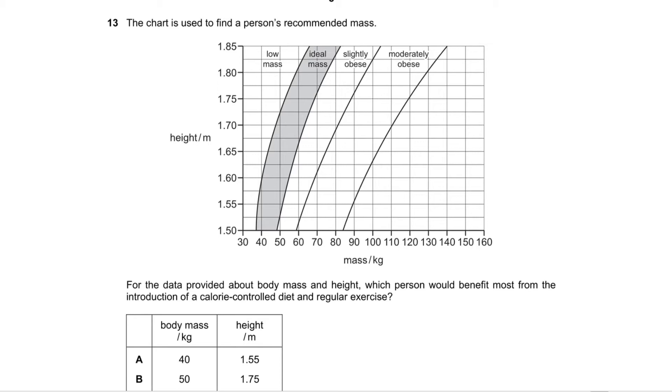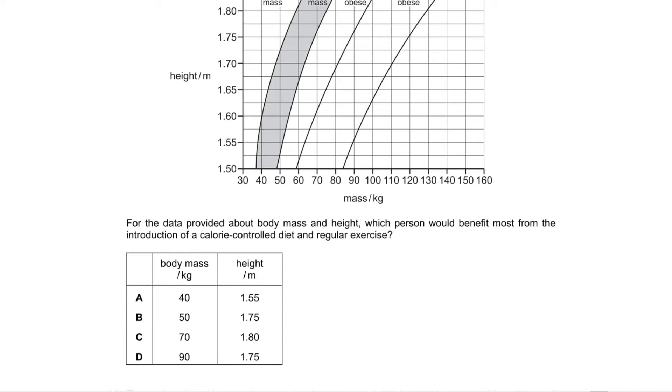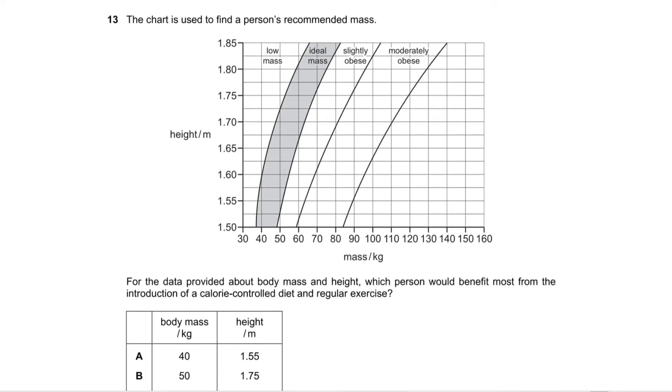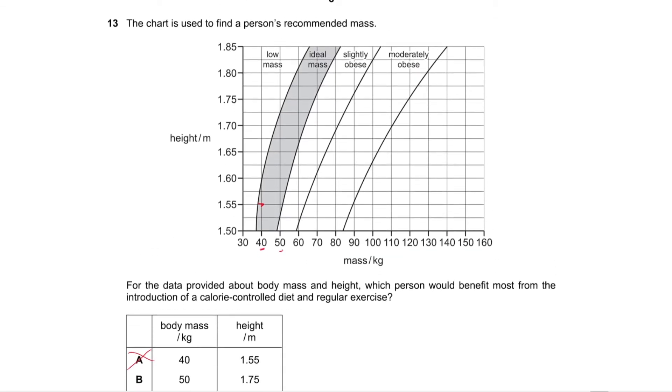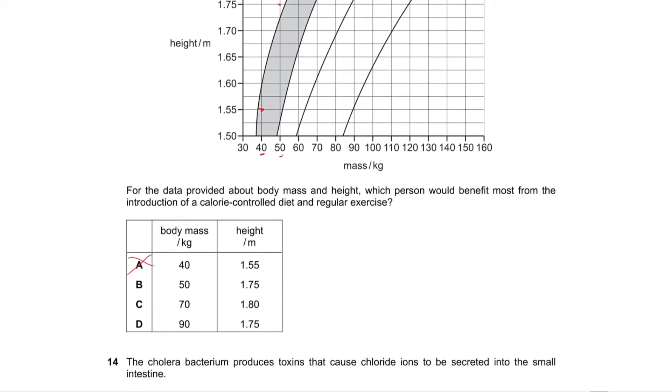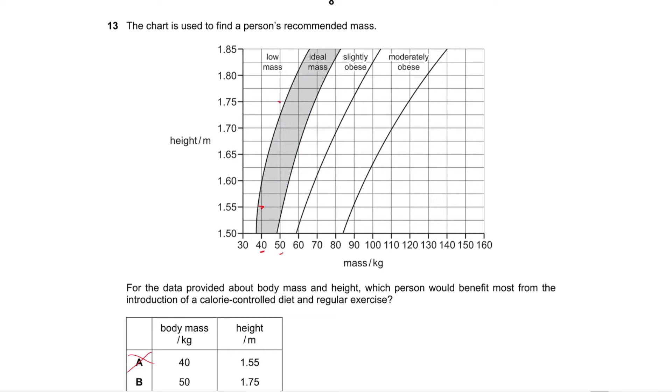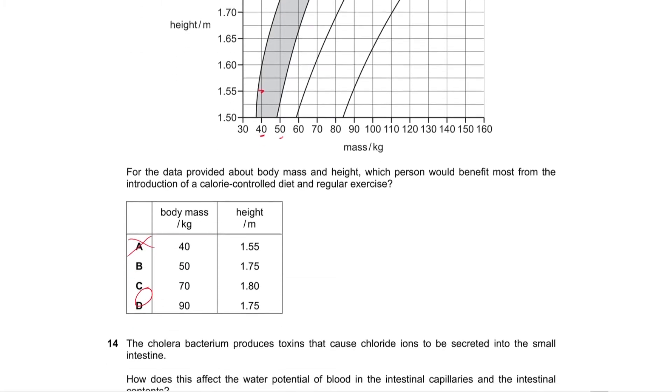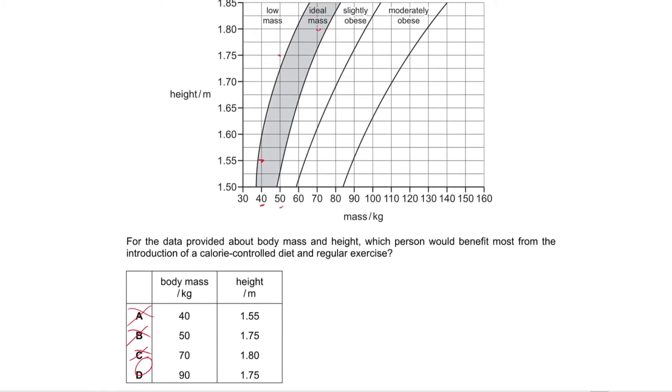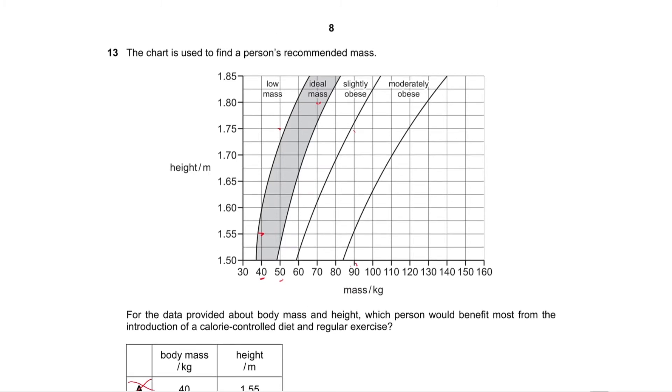Question number 13 says the chart is used to find a person's recommended mass for the data provided about body mass and height. Which person would benefit most from the introduction of a calorie controlled diet and regular exercise? Basically they're saying who's overweight. So let's go for body mass of 40 and height of 1.55, no. Body mass of 50 and 1.75, no that's low mass. 17 and 1.80, no. So obviously it's D. Let's check just in case: 90 and 1.75, that's moderately obese. So yeah.